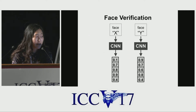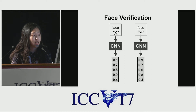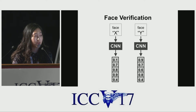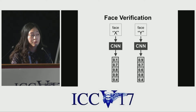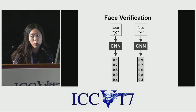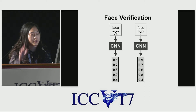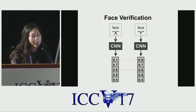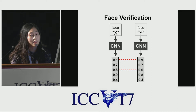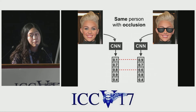A typical verification system takes as input two face images and computes feature vectors for them. Then the distance between two feature vectors is computed. As an example, we can think of Euclidean distance, which considers all the feature dimensions. In this kind of scenario, feature dimensions showing some differences will penalize the distance score. But what happens if the differences actually come from some occlusions?